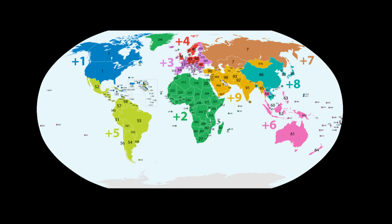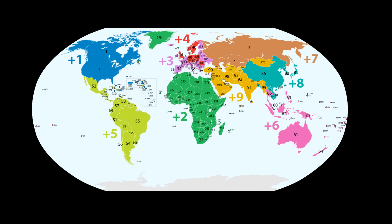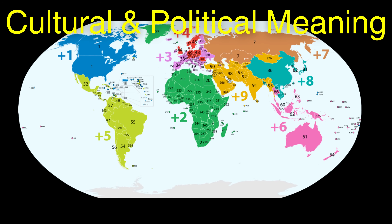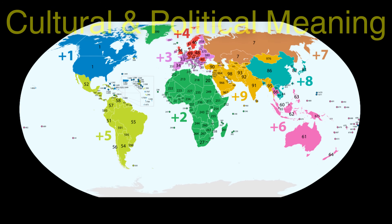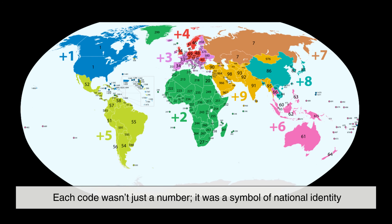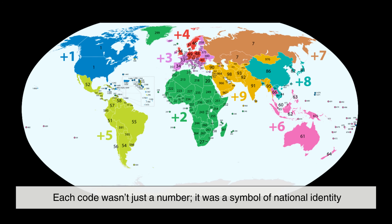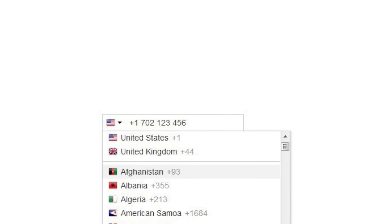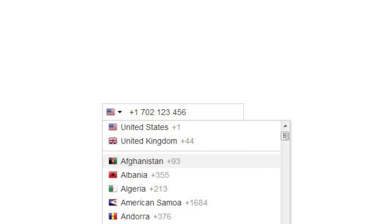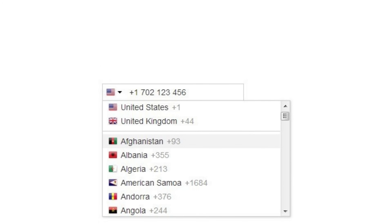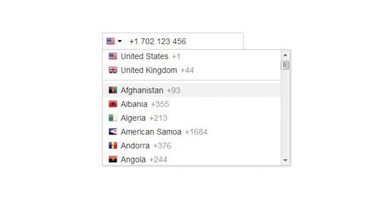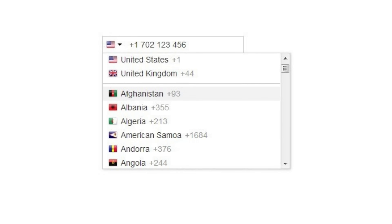The creation of country codes also had a profound cultural and political meaning. Each code wasn't just a number — it was a symbol of national identity. For newly independent nations, obtaining their own code from the ITU was like raising a flag in the digital landscape, a recognition that their voice mattered on the world stage.